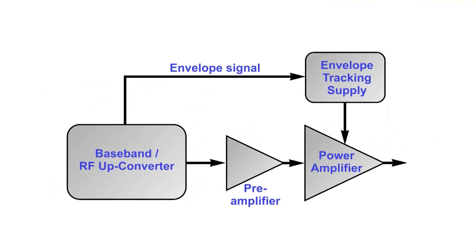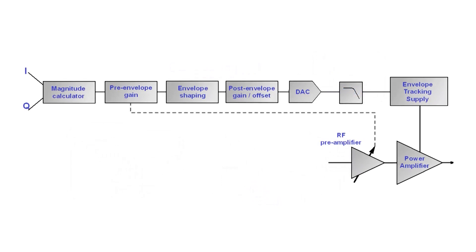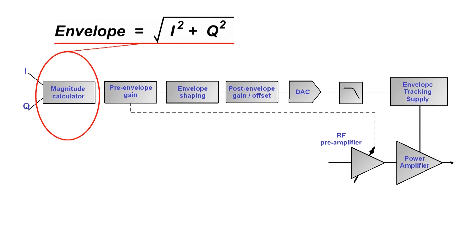In an envelope tracking system, it's necessary to generate a signal that represents the envelope to control the supply or modulator. The chain consists of several circuit blocks. The first block generates the basic signal. This is created by taking the square root of the sum of the squares of the I and Q signals.